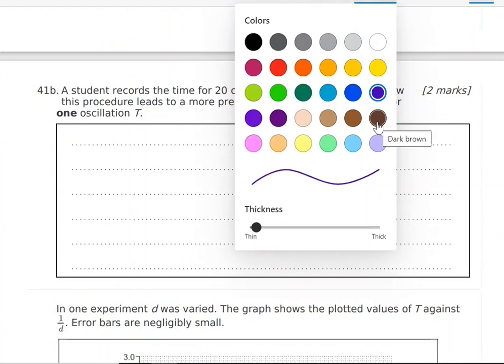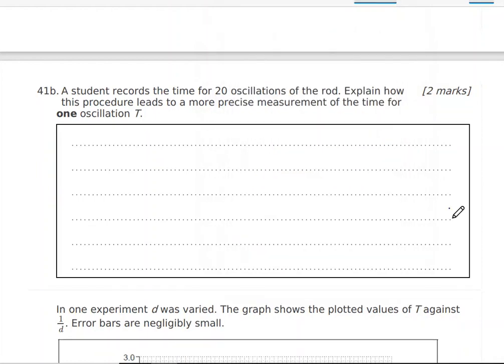Now B. We have a student records the time for 20 oscillations of the rod. Explain how this procedure leads to a more precise measurement of the time for one oscillation. Now we studied before if when we repeat the oscillation, when we repeat the measurements many time, and then we find the error or we find the average or the mean.